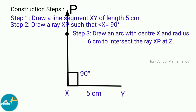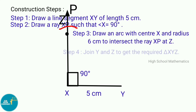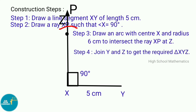Step 3: Draw an arc with center X and radius 6 centimeters to intersect ray XP at Z. Step 4: Join Y and Z to get the required triangle XYZ.